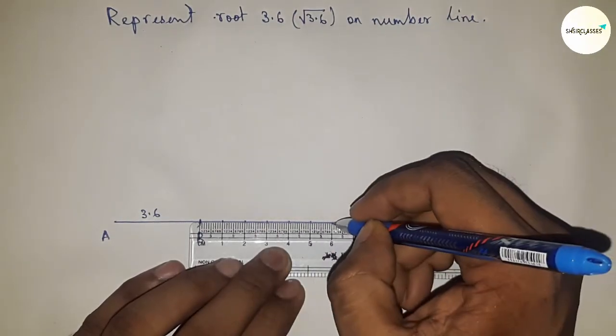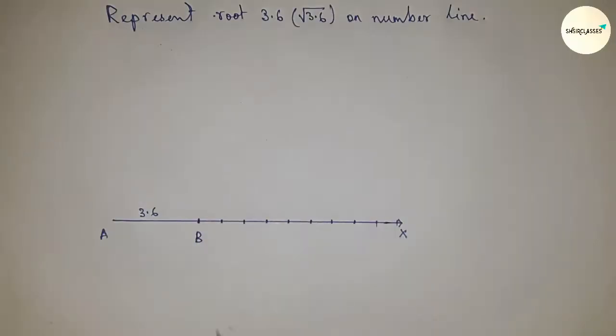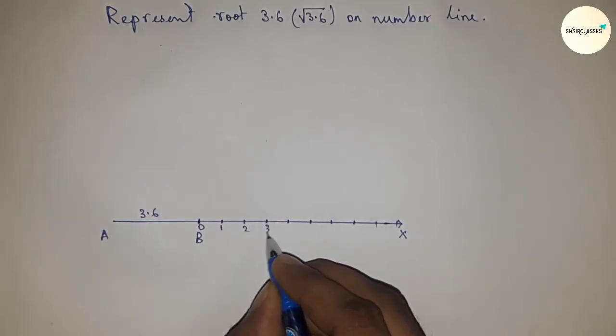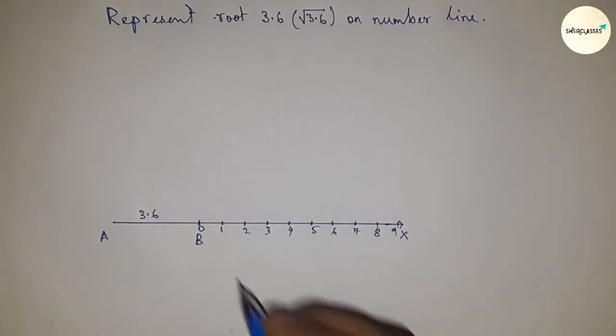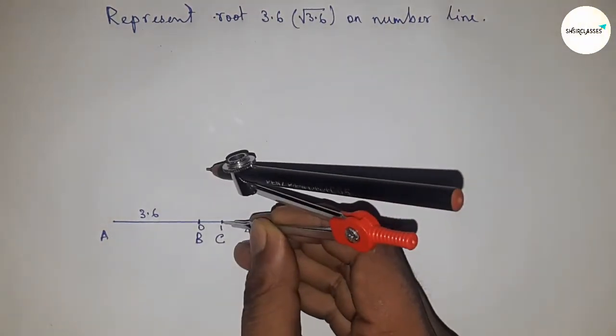Now mark the numbers on the line from B to X using a scale. This is 0, 1, 2, 3, 4, 5, and so on. Now take this as point C and bisect the line AC.